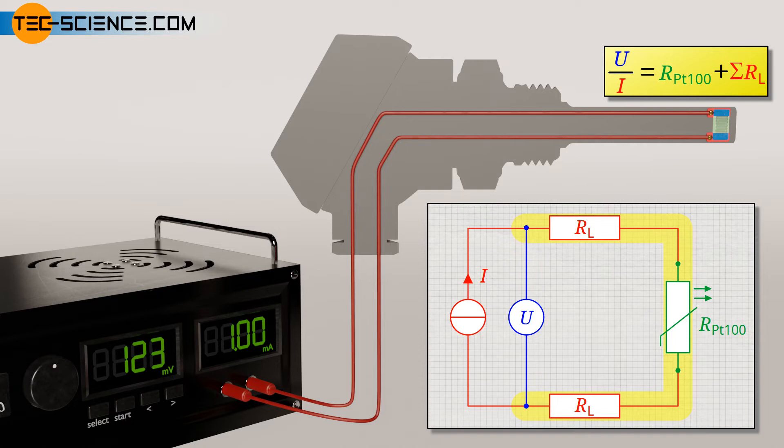With a PT100, the temperature measurement is falsified by about 0.5 degrees Celsius per meter of measuring lead. With a PT1000, the value is 10 times lower, 0.05 degrees Celsius per meter.